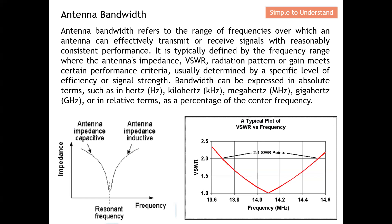How can we quantify the bandwidth? This is typically defined by the frequency range where the antenna impedance, the VSWR, radiation pattern, or the gain meet certain criteria. When they meet certain criteria, we classify them as the antenna bandwidth.